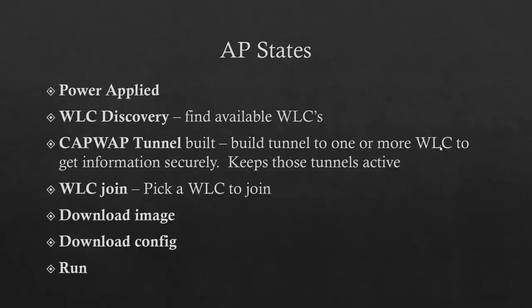The first part of the chapter talks about the processes that the access point goes through when it first starts up. Obviously the first thing that happens is power is applied. Then it looks for a wireless LAN controller, so it does discovery, trying to find a wireless LAN controller. During the discovery process it will find one or more wireless LAN controllers. The third step is it builds the CAPWAP tunnels between one or several wireless LAN controllers depending on how you have things configured.